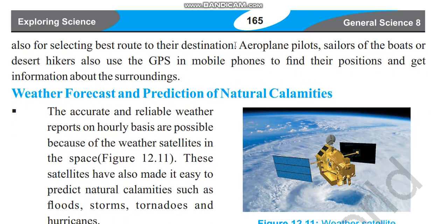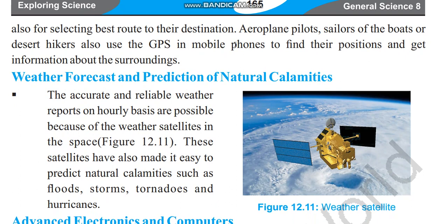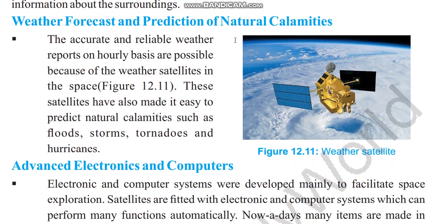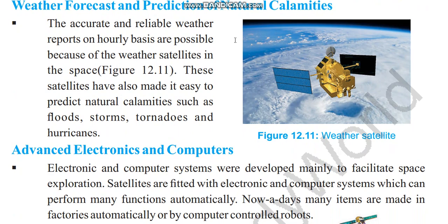Accurate and reliable weather reports on a daily basis are possible because of weather satellites in space. Figure 12.11 shows a weather satellite. These satellites have also made it easy to predict natural climates such as floods, storms, tornadoes, and hurricanes.